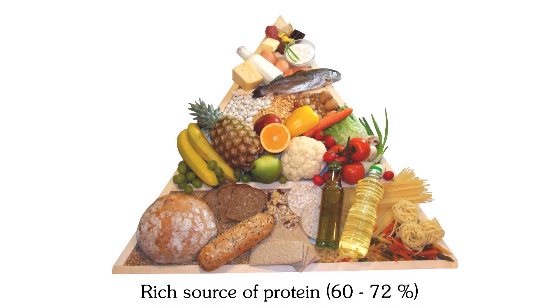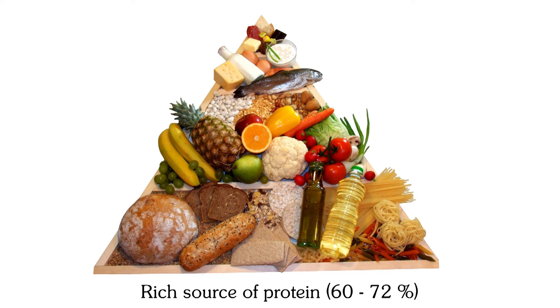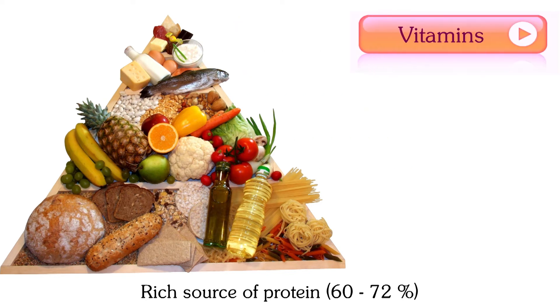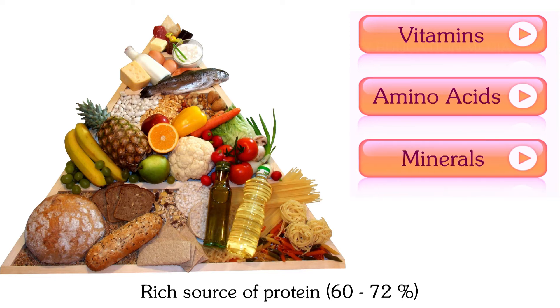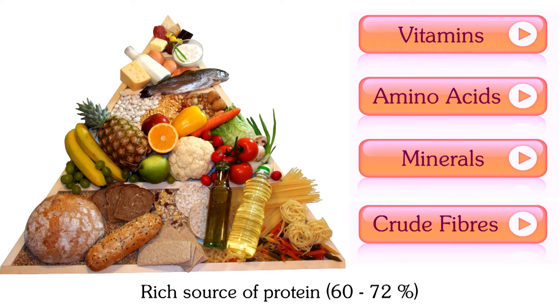What are the uses of single cell protein? It is a rich source of protein — it contains about 60–72% vitamins, amino acids, minerals, and crude fibers.